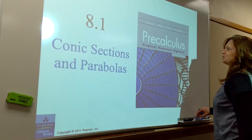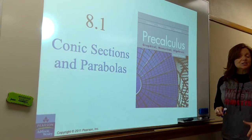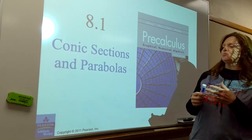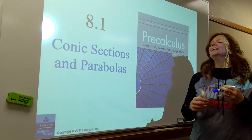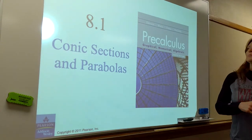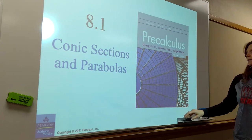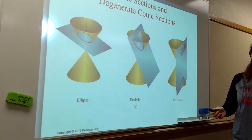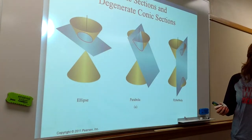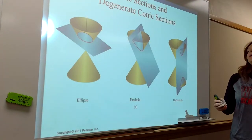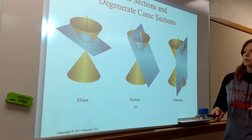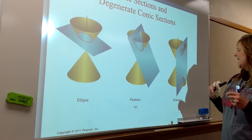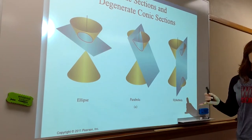Here we go with chapter eight. We have parts of chapter eight left and parts of chapter nine left. Chapter eight is conics, and we're going to take a look at three conic sections: just three sections in chapter eight. We're going to deal with the ellipse, the parabola, and the hyperbola.